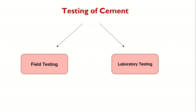Field tests are generally carried out on the work site and no sophisticated equipment or special apparatus is required. Experience plays an important role in the assessment of observations in the field, which is used for qualitative assessment of the cement. Laboratory tests require special equipment and apparatus, and one has to quantitatively evaluate the properties of cement.